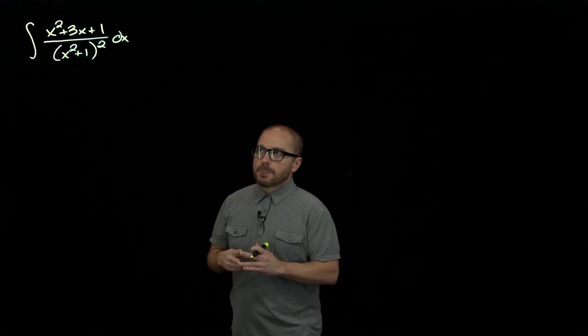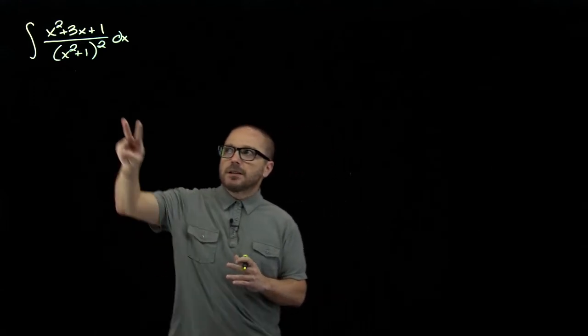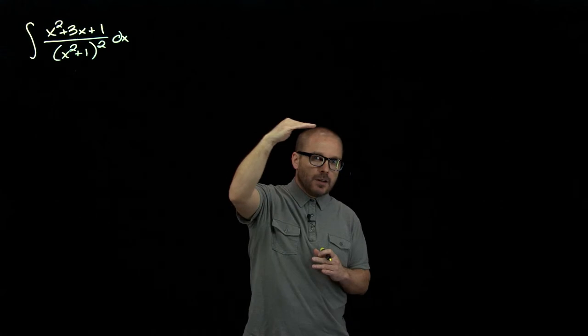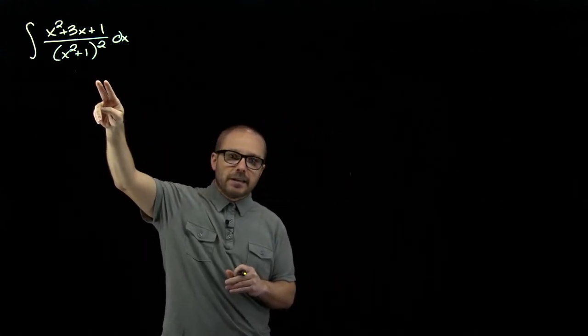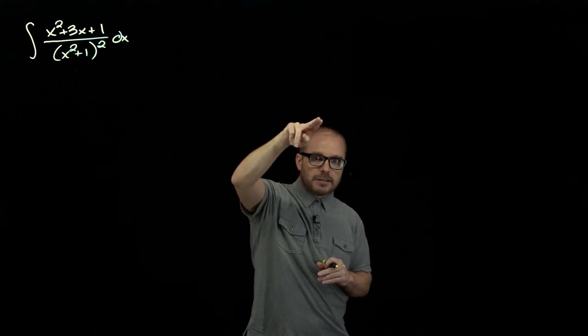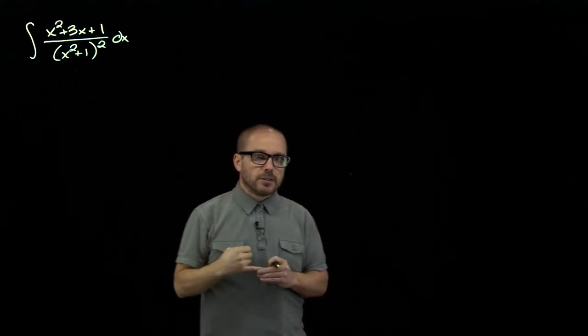We know, first of all, that because it's quadratic, it gets a linear expression on top. And because it's repeated, it needs to appear to every degree up to the degree we have here.